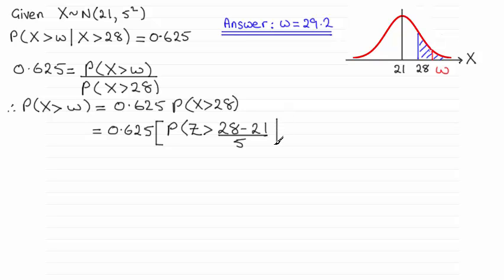So you should be familiar with standardising then your variable x equaling 28. That turns out to be 1.4. So what we've got here then is 0.625 multiplied by the probability that z is greater than 1.4.